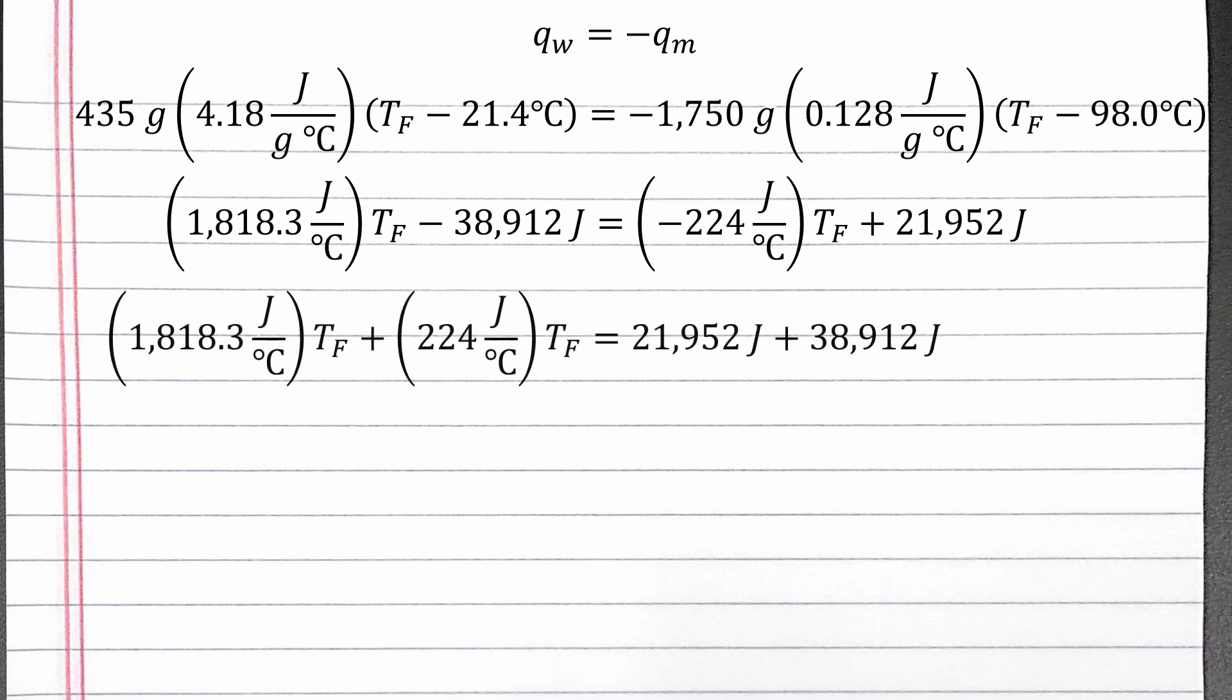We can add 224 joules per degree Celsius times T final to both sides and add 38,912 joules to both sides. That will bring all of the T final terms to the left side of the equation and all of the constant values to the right side.